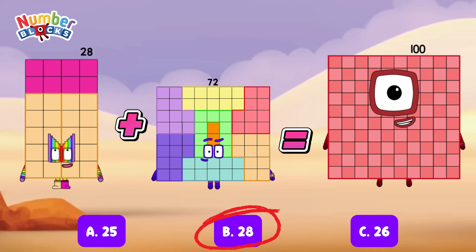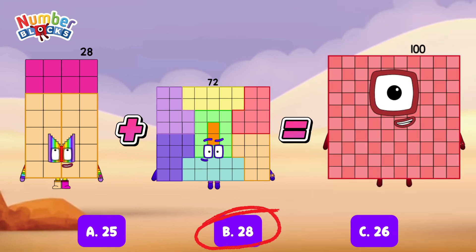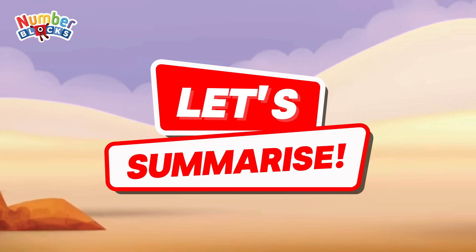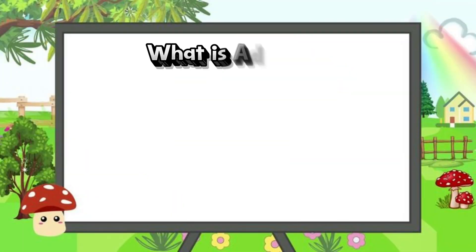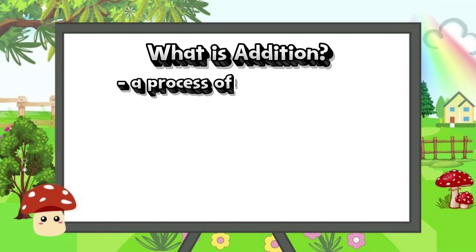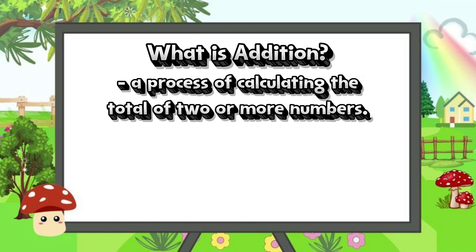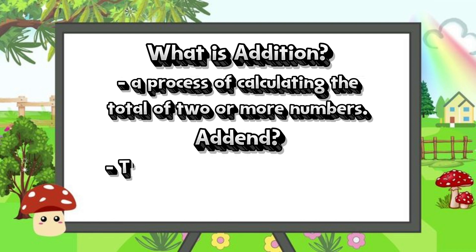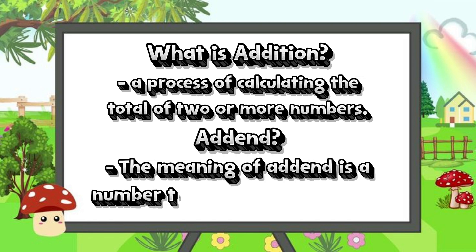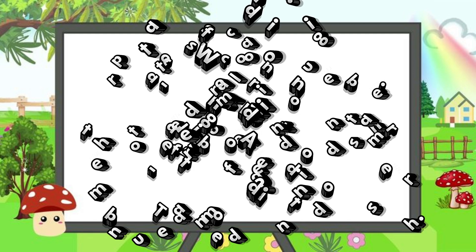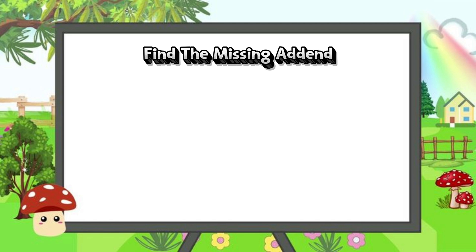28 plus 72 is equals to 100. Now, join me and let's summarize. What is addition? Addition is a process of calculating the total of two or more numbers. While addend, the meaning of addend is a number to be added to another. Let's try some examples — find the missing addend.